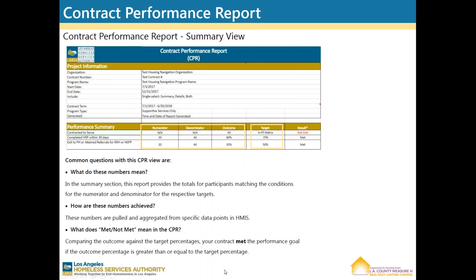Here's a look at the CPR Summary View. Some common questions with this view are: what do these numbers mean? In the Summary section, this report provides the totals for participants matching the conditions for the numerator and denominator for the respective targets. How are these numbers achieved? These numbers are pulled and aggregated from specific data points in HMIS. What does met and not met mean in the CPR? Comparing the outcome against the target percentages, your contract met the performance goal if the outcome percentage is greater than or equal to the target percentage.